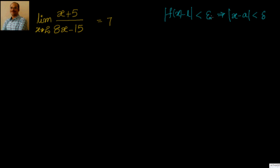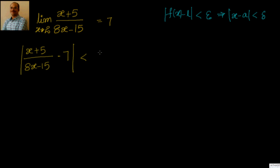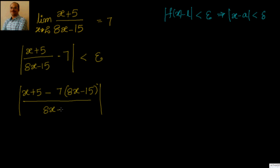So first we have to go with |f(x) - L| < epsilon. I will write down |(x + 5) / (8x - 15) - 7|, that is f(x) - L, is less than epsilon. Now if I simplify that, I will have |x + 5 - 7(8x - 15)| divided by |8x - 15|, less than epsilon.